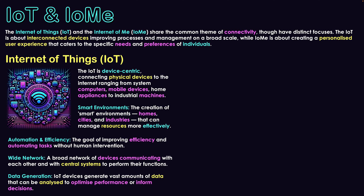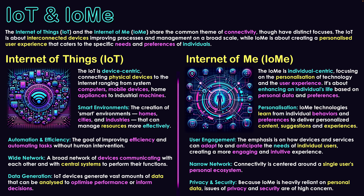All of that links to the Internet of Things — how the technology is essentially doing things and connected with each other to create smart networks. Now we'll jump over to the IoMe, the Internet of Me. Whereas the Internet of Things is device-centric, the IoMe is individual-centric, focusing on the personalization of technology and the user experience of the individual. It is about enhancing an individual's life based on personal data and preferences. They work hand-in-hand because we need that infrastructure of technology to create the Internet of Me and have an ecosystem that supports an individual's needs and preferences.